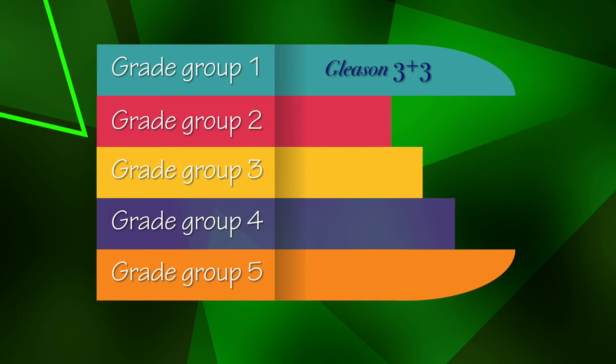Higher risk would merit a higher grade group. Gleason score 7 would be replaced by two new grade groups: grade group 2 for 3 plus 4, grade group 3 for 4 plus 3. This overcomes the problem that men had in understanding that all Gleason 7s were not the same. 4 plus 3 was more aggressive than 3 plus 4. Now they are clearly different groups.